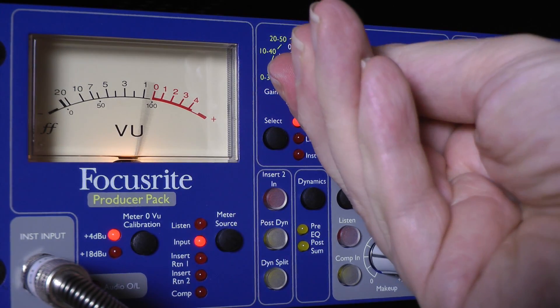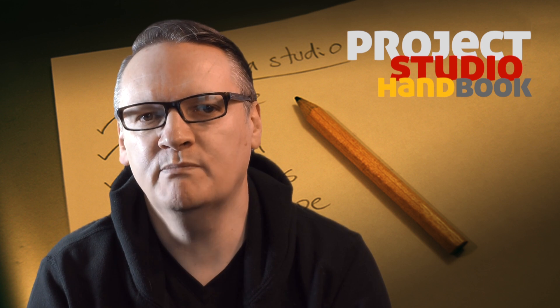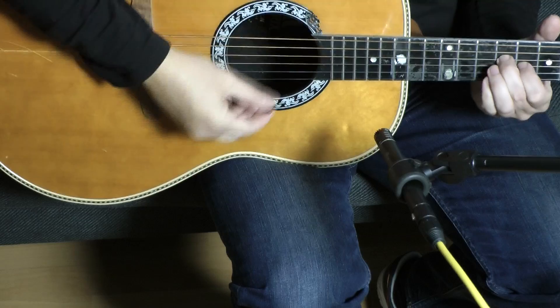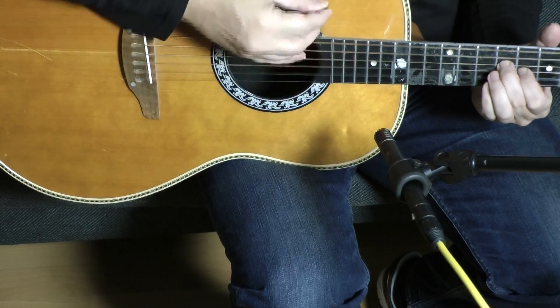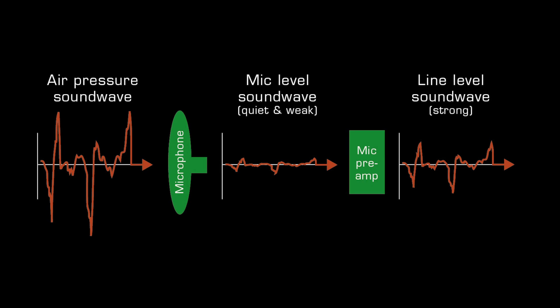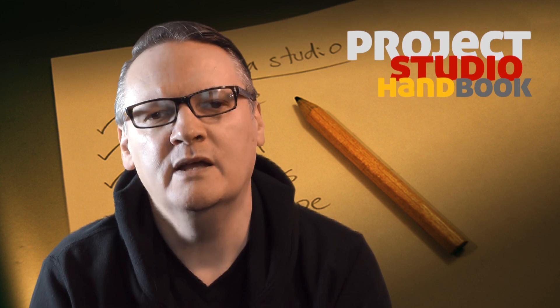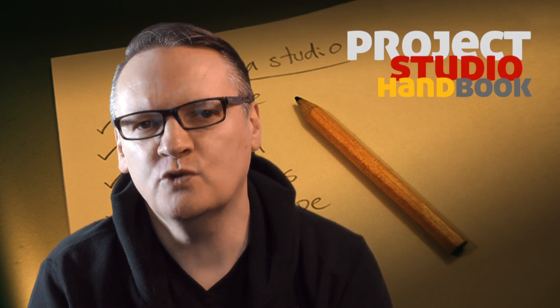A microphone preamplifier performs a simple but essential job. It must amplify the very quiet signal coming from a microphone up to line level so that it can be recorded, processed, or sent to a PA or monitoring system. It must do this without distortion and without introducing unwanted artefacts into the signal.